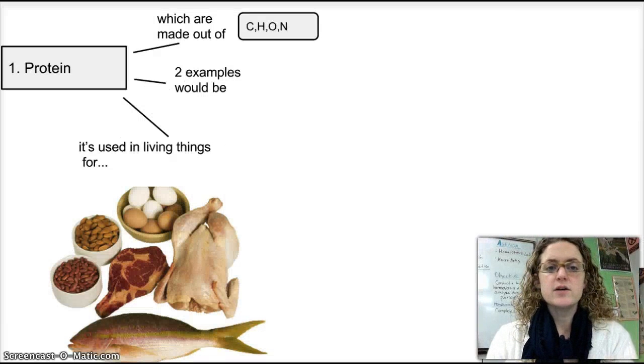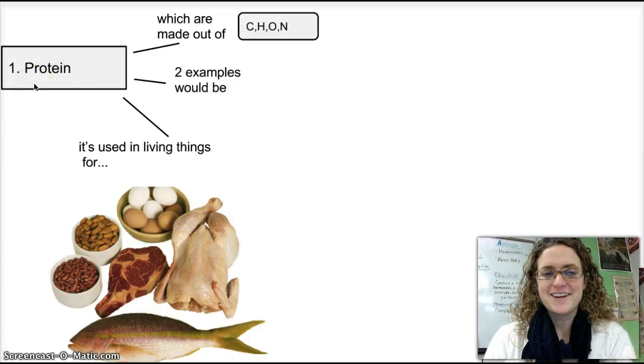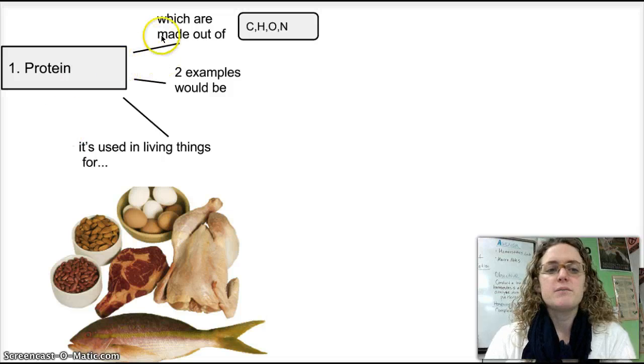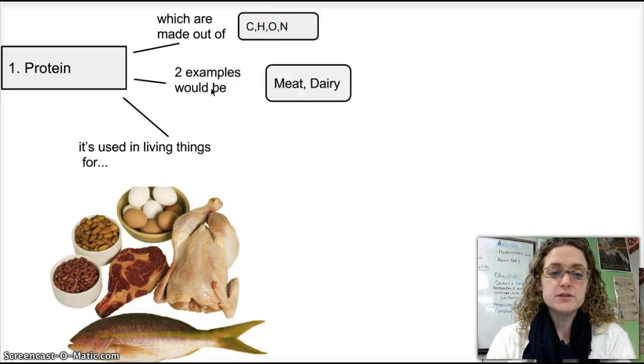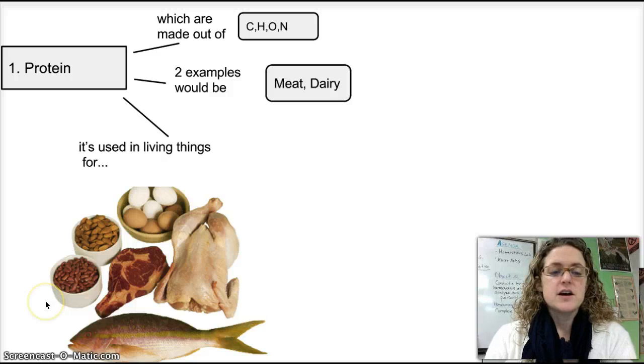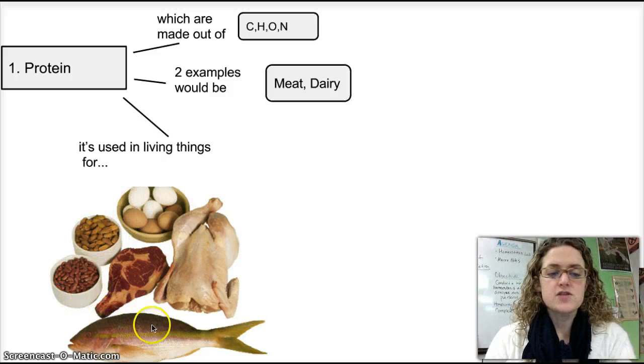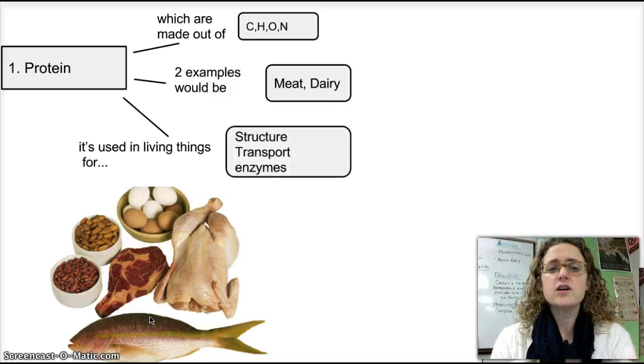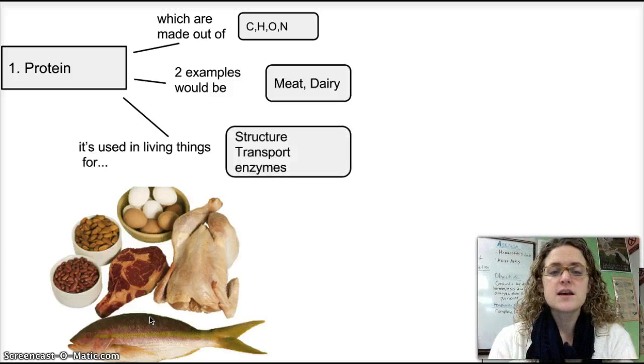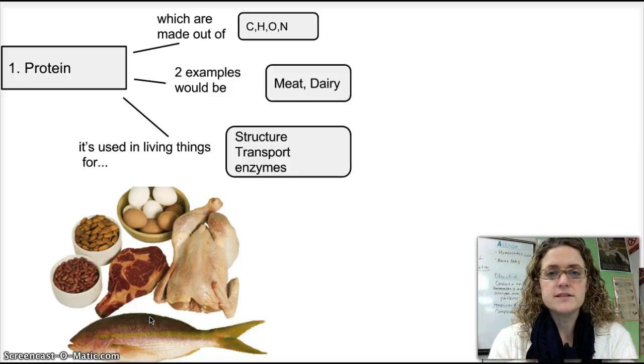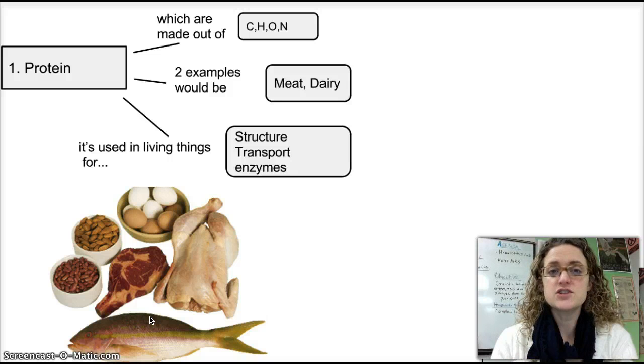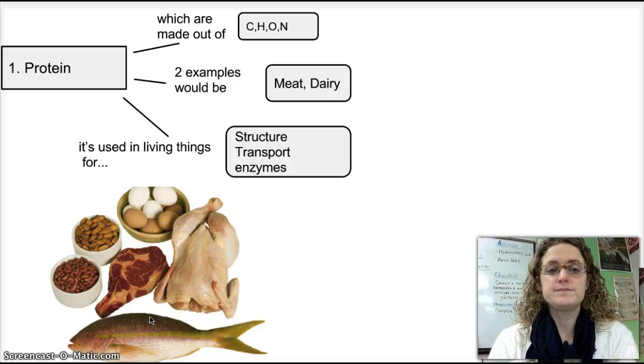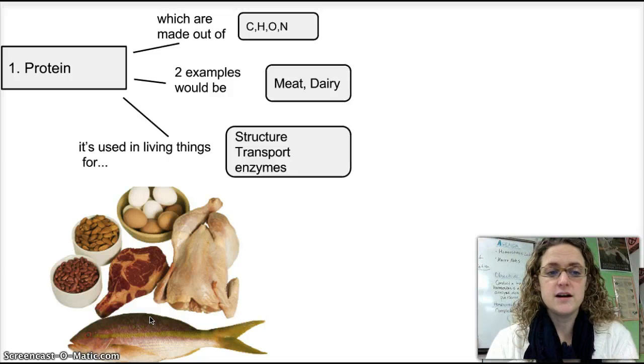So let's talk about our first macromolecule. We have protein here. Protein is made out of the atoms carbon, hydrogen, oxygen, and nitrogen. Some common examples are going to be meats and dairies, eggs, nuts, legumes, and a lot of meats are examples of the proteins that you're intaking in your diet. And they're also used internally in cell processes to provide structure, in tissues, and to provide transport of messages. And then in enzymes, which help speed up chemical reactions and allow them to occur in a way that your body can use them more readily.